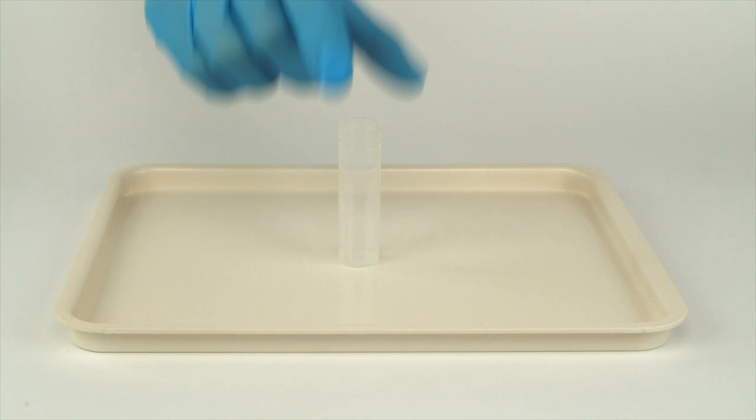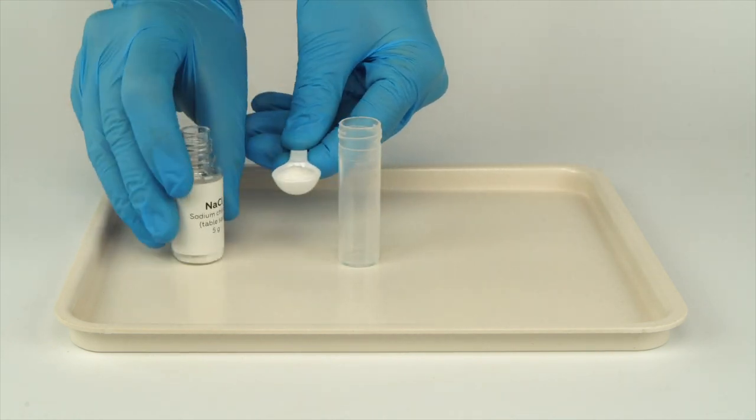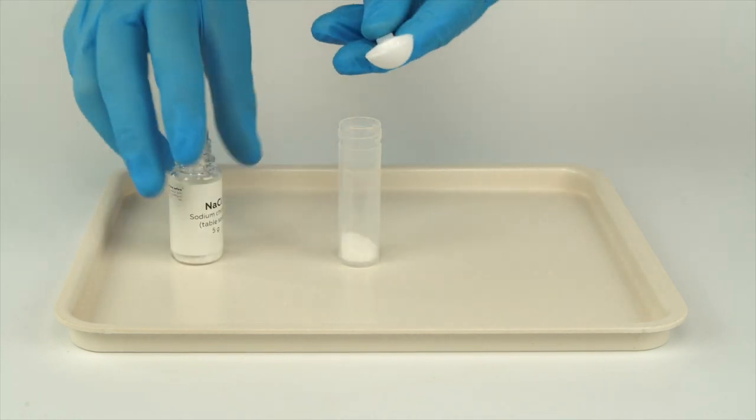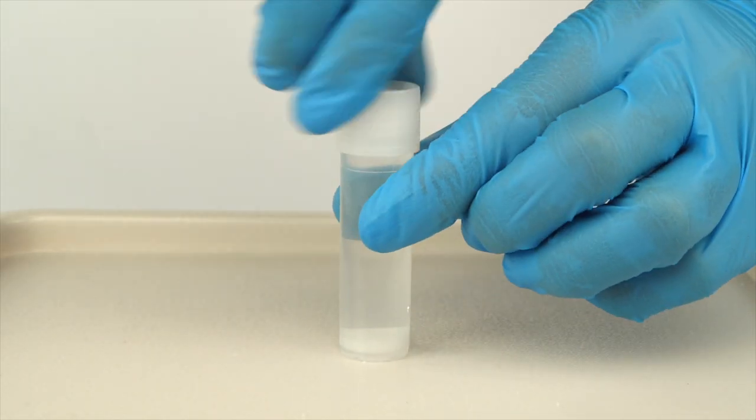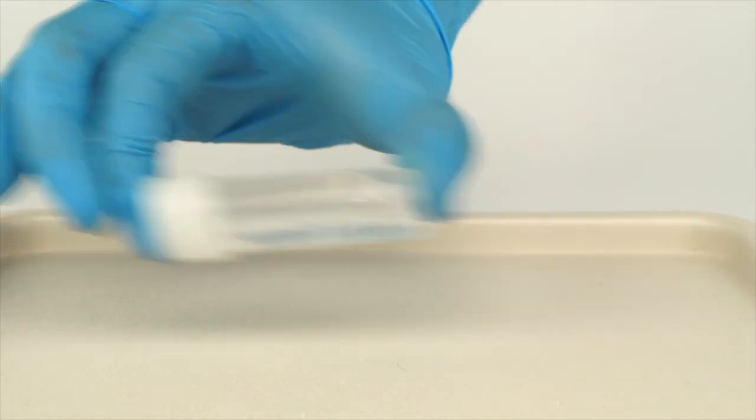Prepare some salt water. Pour one big spoon of sodium chloride into the vial. Fill the vial the rest of the way with water. Cap the vial and shake it until the sodium chloride dissolves.